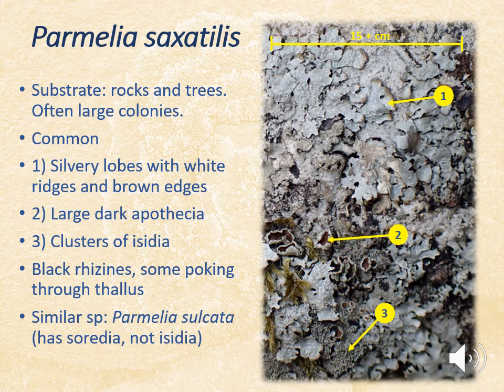A very similar species to look out for is Parmelia sulcata. It also has dark edges to its lobes and white reticulations. The main difference is that Parmelia sulcata does not have isidia but has soredia — so you'll be looking out for powdery granules on the surface of the thallus. Parmelia sulcata can also produce apothecia, but never as many as Parmelia saxatilis, and generally speaking apothecia are rare in Parmelia sulcata.